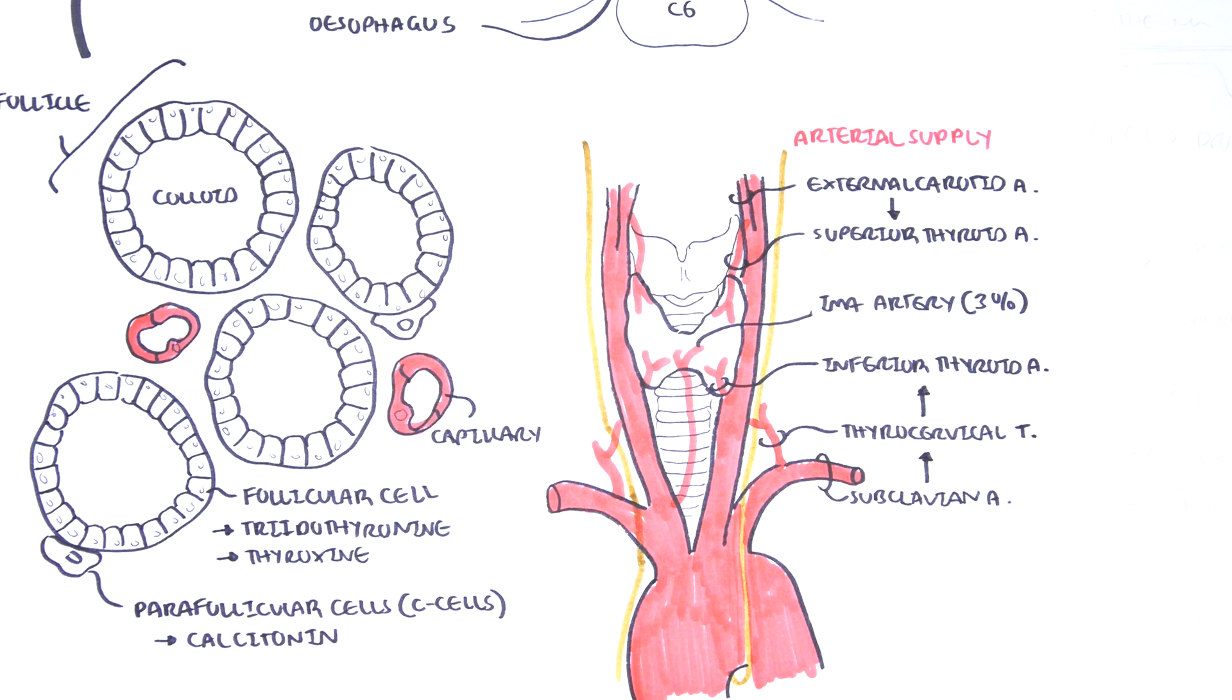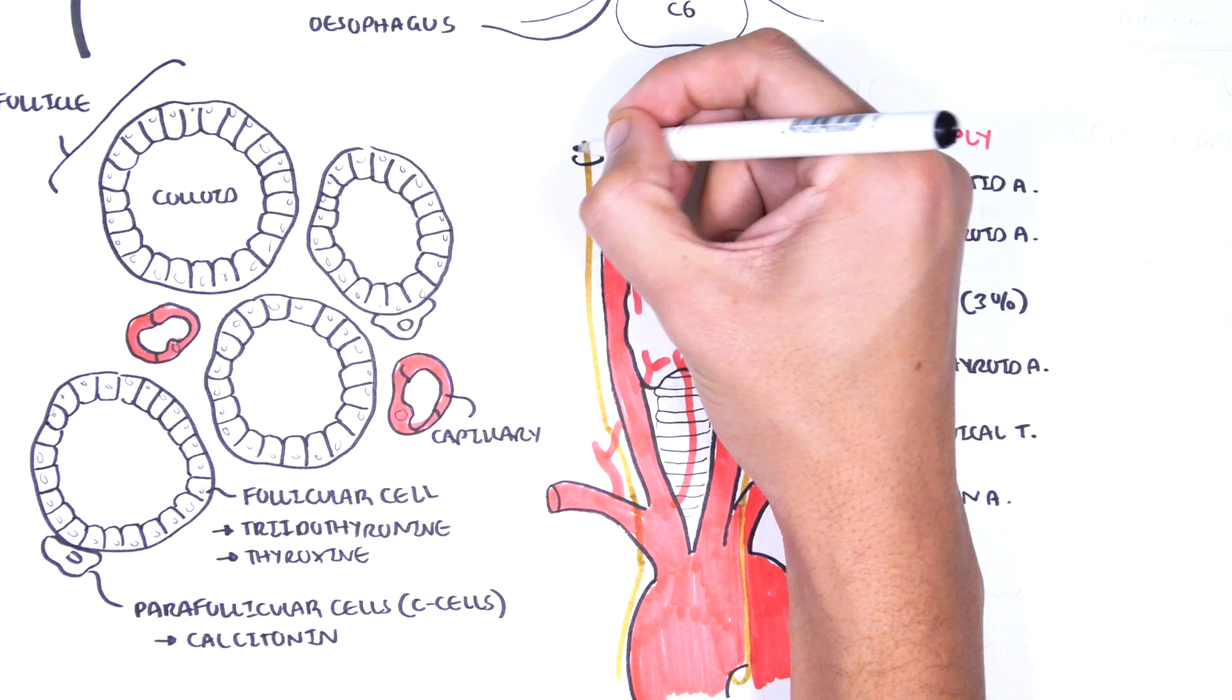Firstly, the thyroid gland is innervated by the sympathetic nerves from the cervical ganglion, but these nerves do not control secretion of the thyroid hormones. The thyroid gland is also innervated by the parasympathetic nerve.